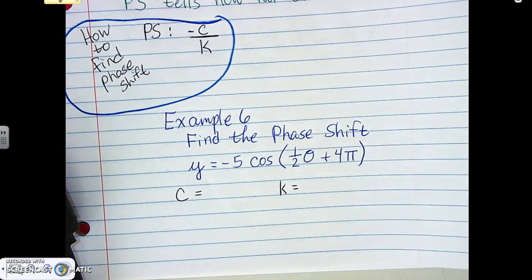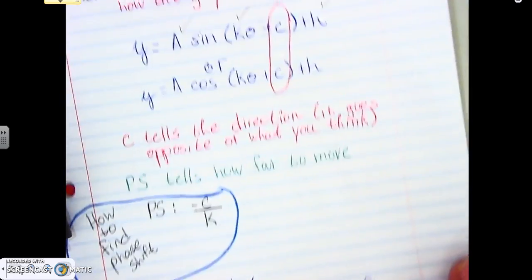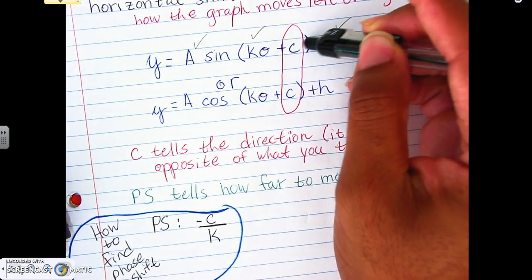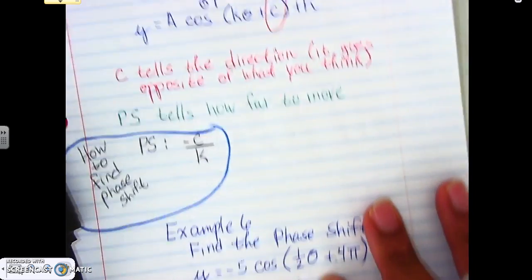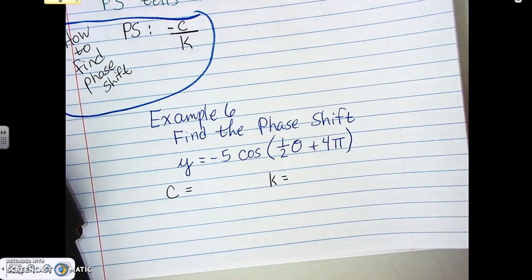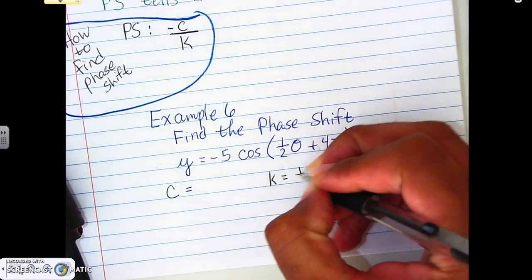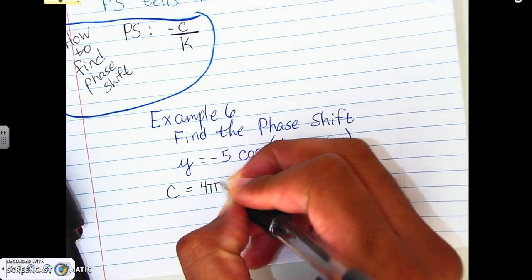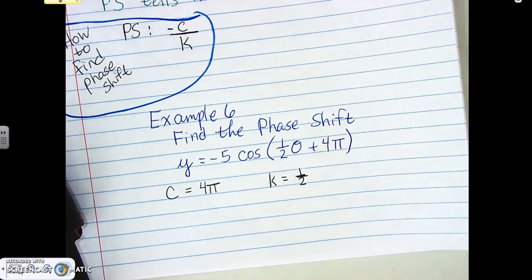Okay. So, we talked about the whole thing about C and K here. We know K is what's in front of theta or in front of X. C is back there inside the parentheses still. So, if we look here, where is our K first off? K is one half. That's right in front of theta. Okay. So, then what is C? Four pi. Okay. So, at this point, let's take a look at C and see if we know what direction we're moving it first. And then we'll find the phase shift to see how far we need to move in that direction.